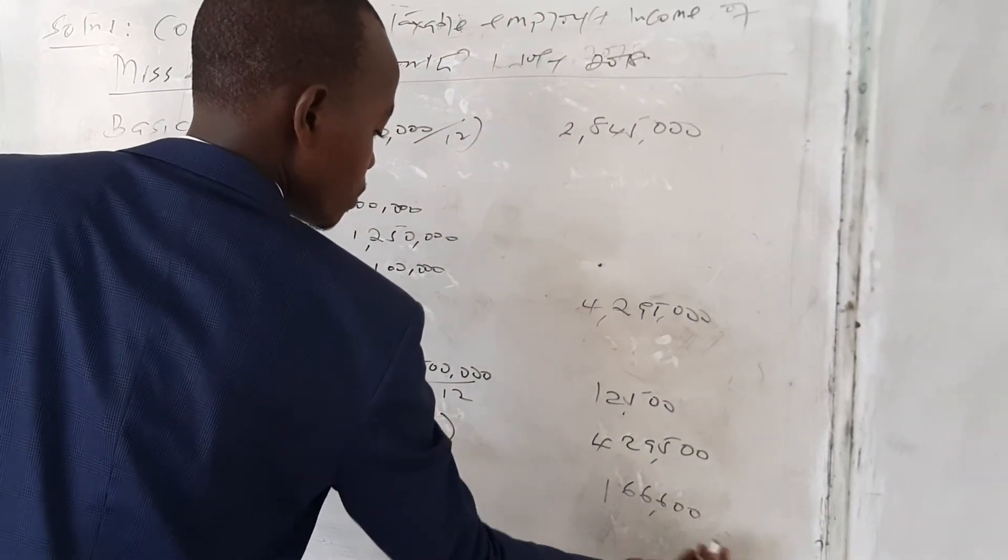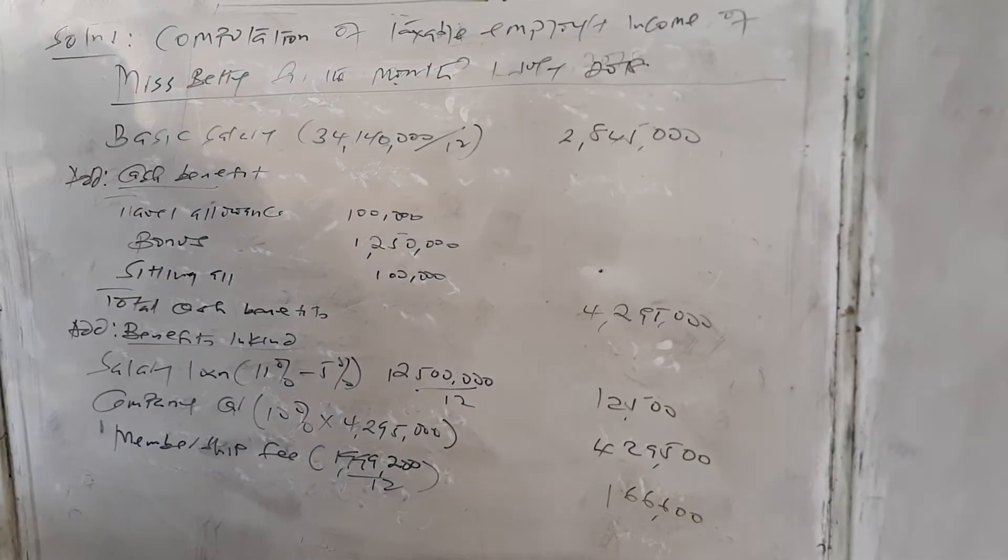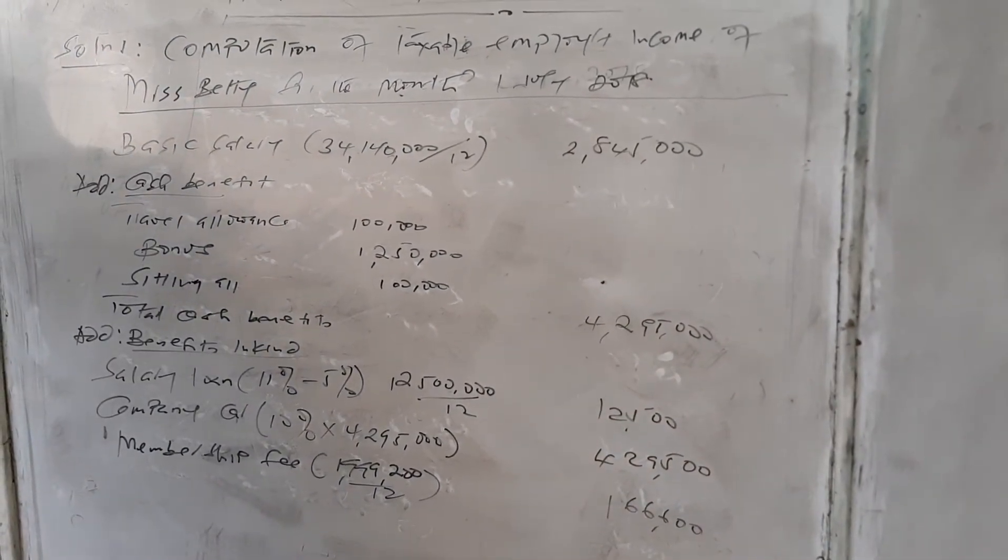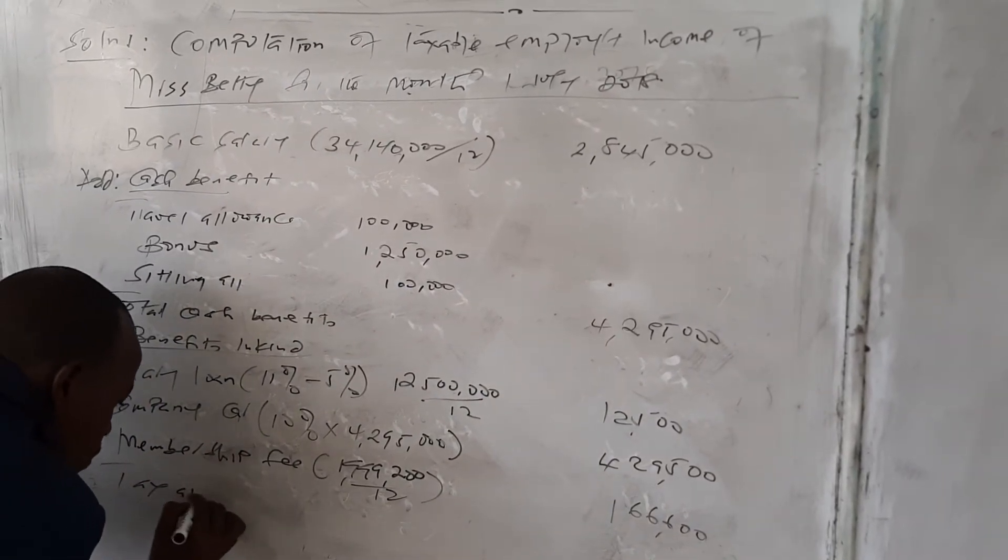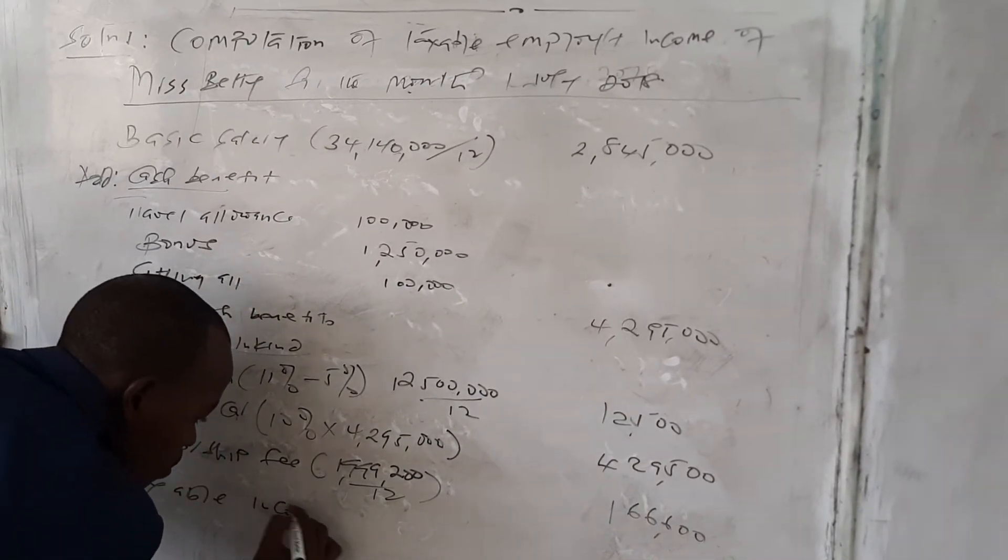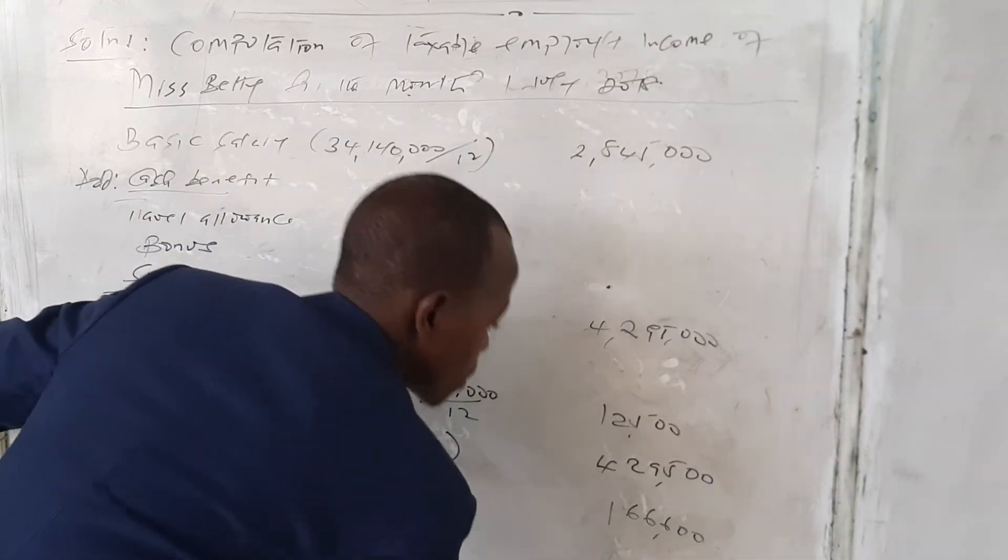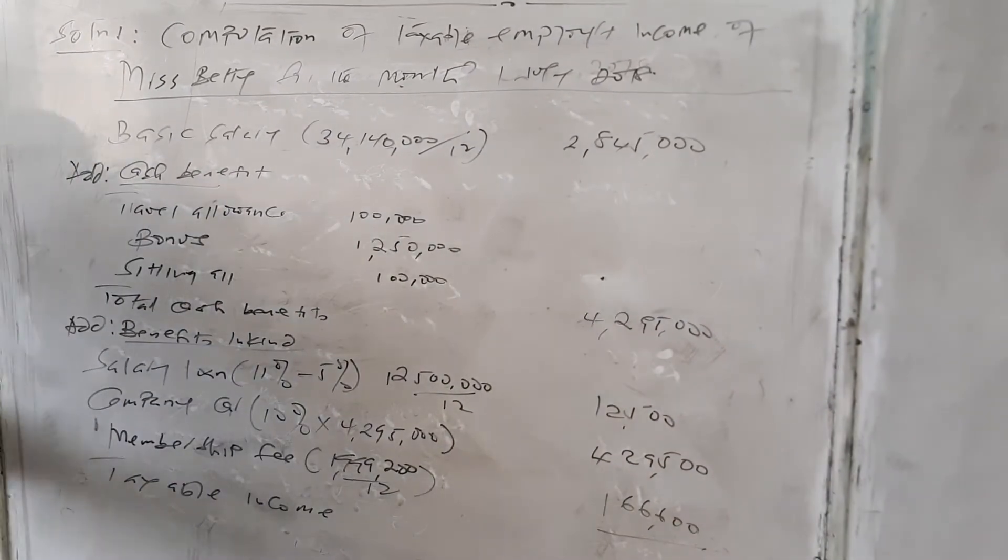So the taxable income—we have to get the total. The taxable income is 8 million.